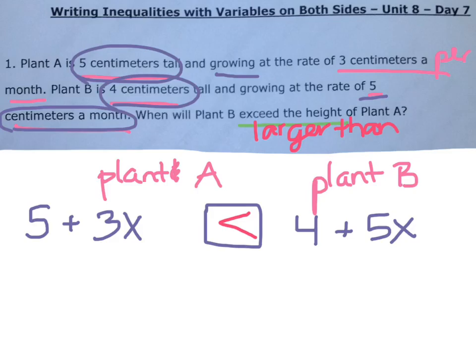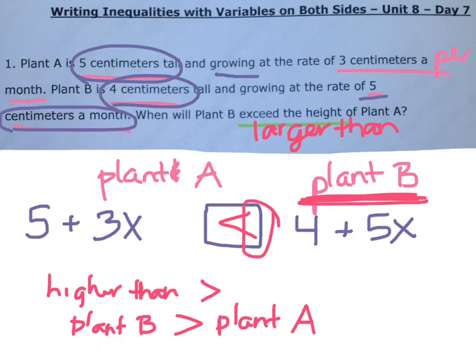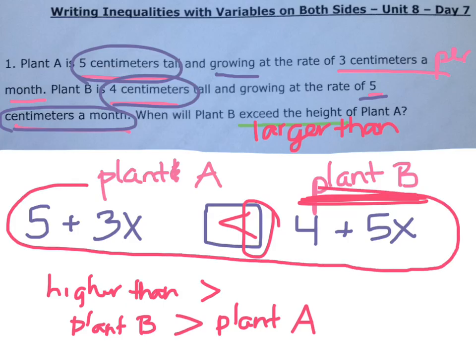If you look at our keywords, the sign for higher than goes this way because plant B is on the other side here. If plant B was on this side, plant B is higher than, then we would use that sign, is higher than plant A. But the sign switched because plant B is the second one over here. So we have to really read the problem and see which one does it want to be bigger and we face that bigger side toward it. So this says 5 plus 3x is less than, or plant A is less than, 4 plus 5x.